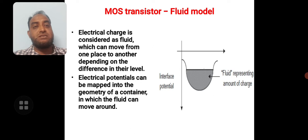So electrical potentials can be mapped into geometry of the container in which the fluid can move around. Potentials can be mapped as a geometry of the device. Then only we can have a variation in the potential levels, then the fluid can be made to move.